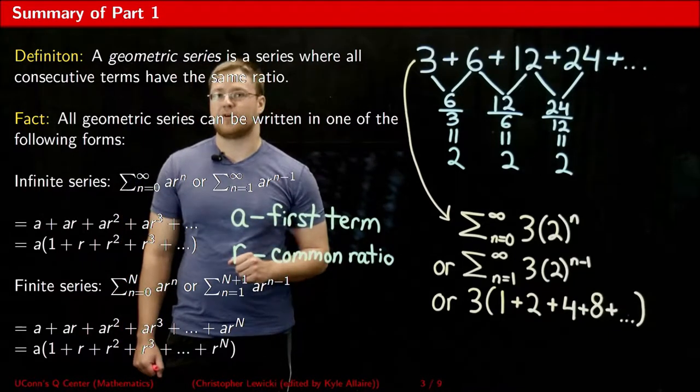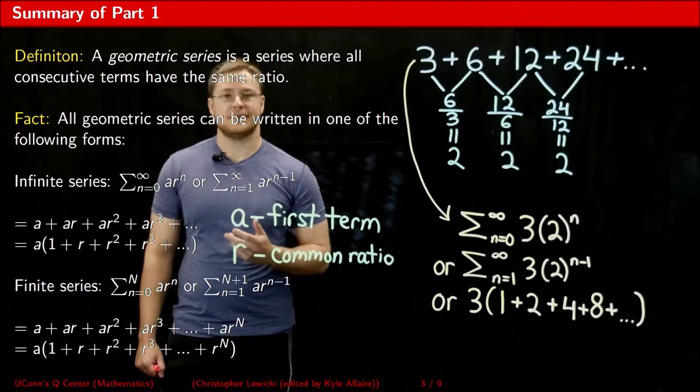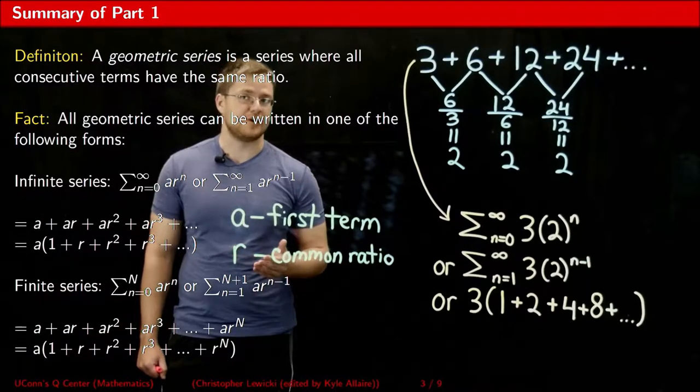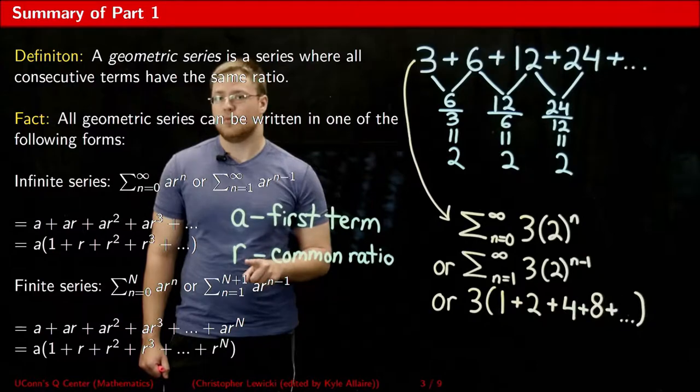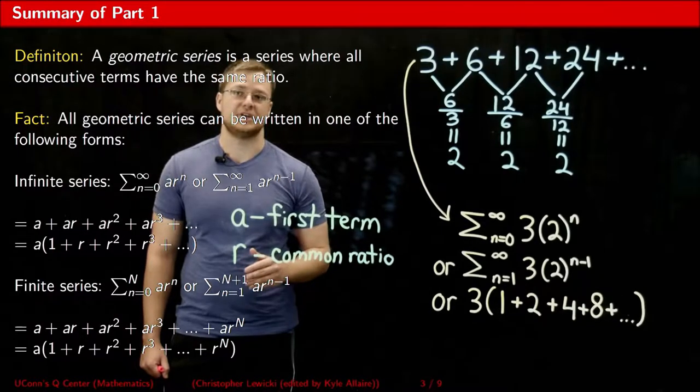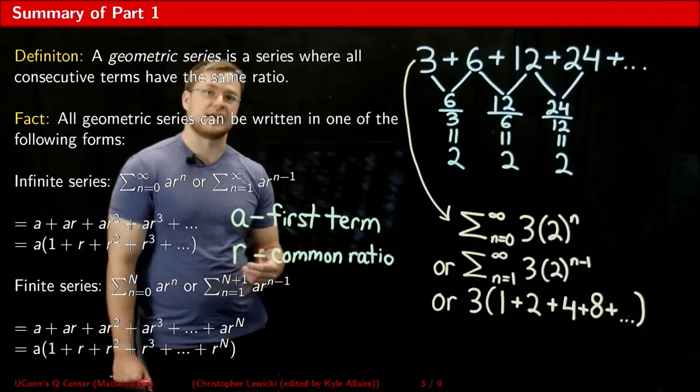Remember that the a stands for the first term of your series. Think about it just like the alphabet. A is the first letter in the alphabet. It's also the first term in any geometric series. Whereas r stands for your common ratio between consecutive terms.